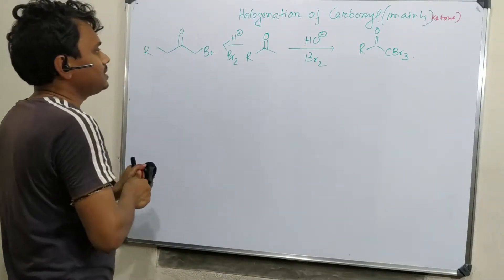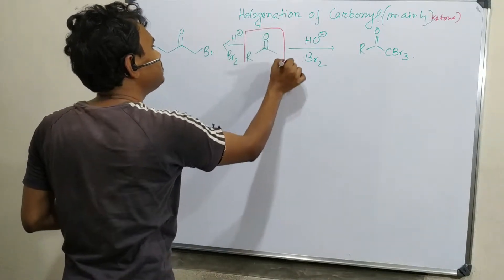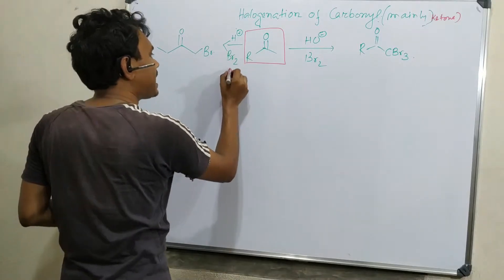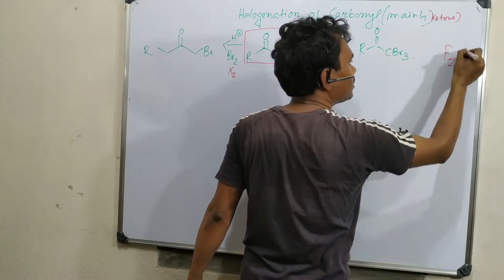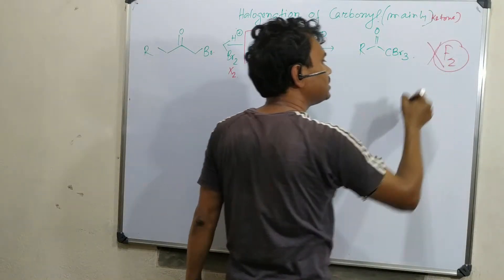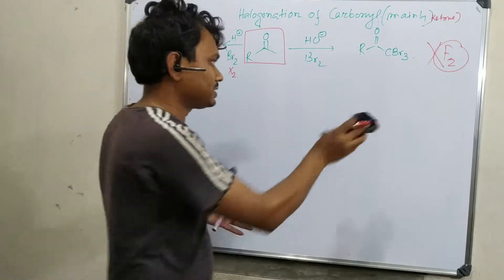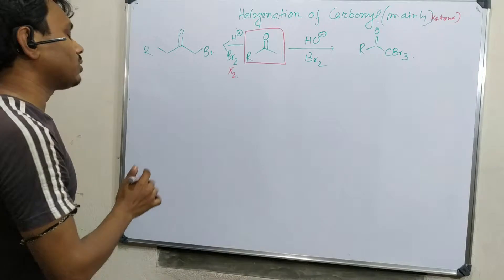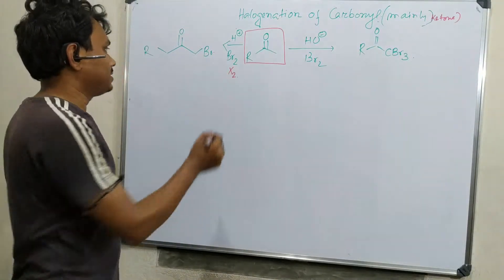You can see the carbonyl compound in presence of acid and X2 (fluorine doesn't show such processes) produces mainly chlorine, bromine, and iodine reactions. It produces mono-halo substituted at the alpha position to carbonyl.